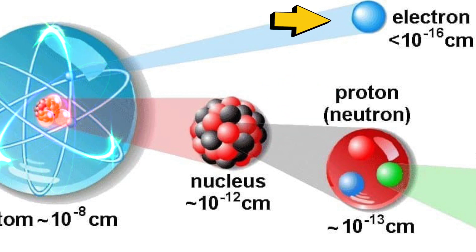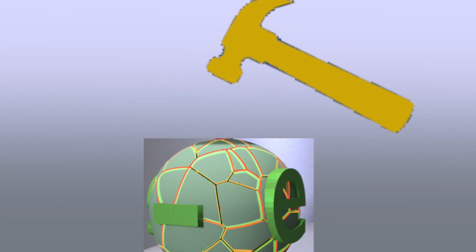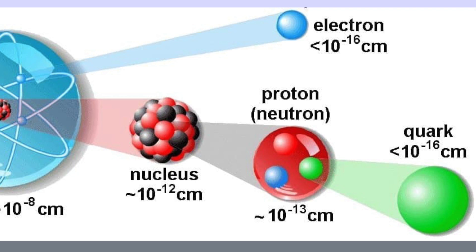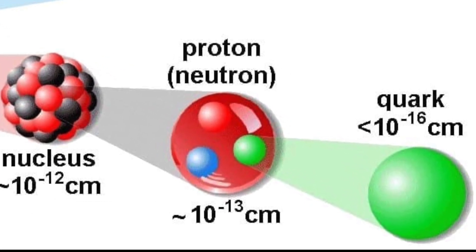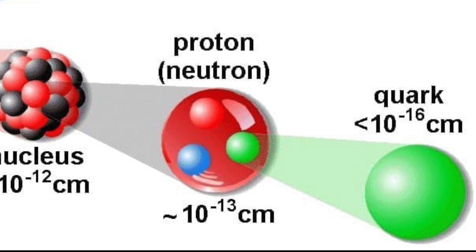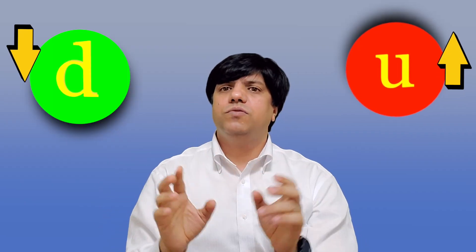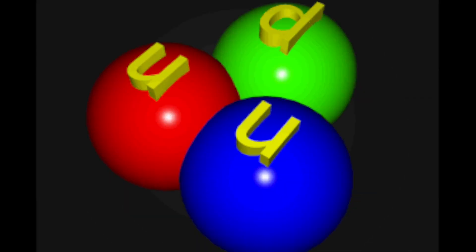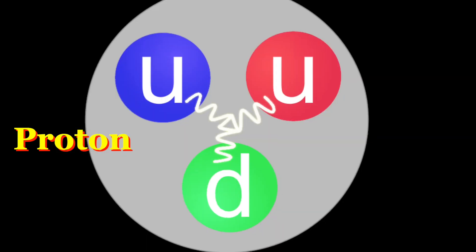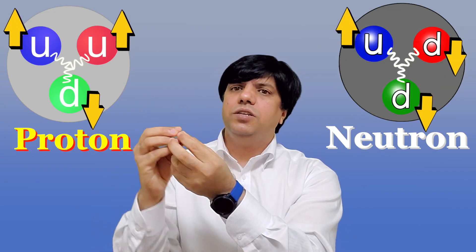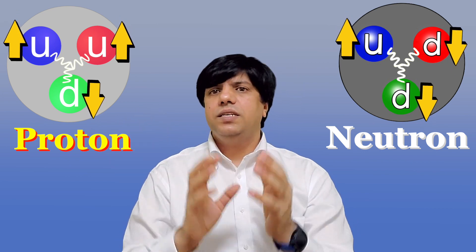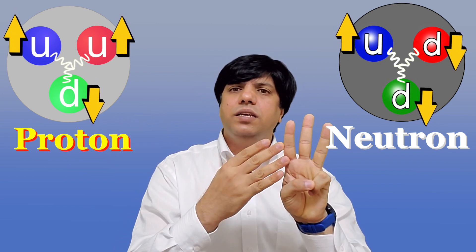An atom is made of electrons, protons, and neutrons. Now, what is an electron made of? If you try to break an electron, nothing happens — it's the smallest a particle can be. But you can break a proton down, and inside you'll find things called quarks. The same goes for neutrons. A quark is the basic unit from which protons and neutrons are made. Two up quarks and one down quark make a proton; two down quarks and one up quark make a neutron.